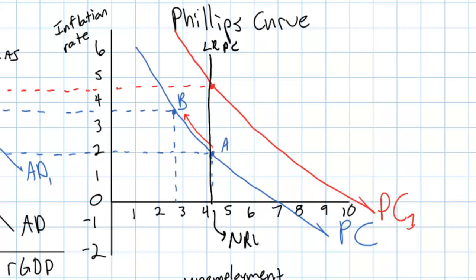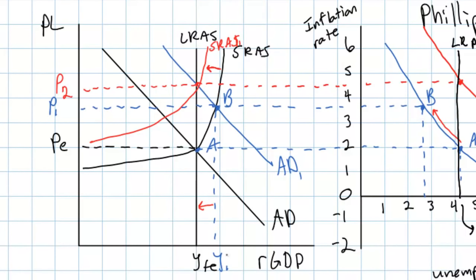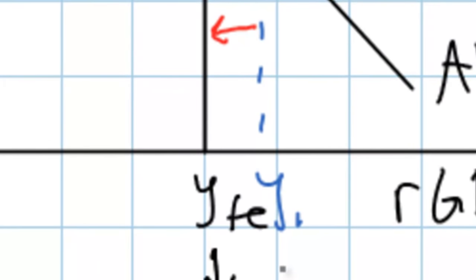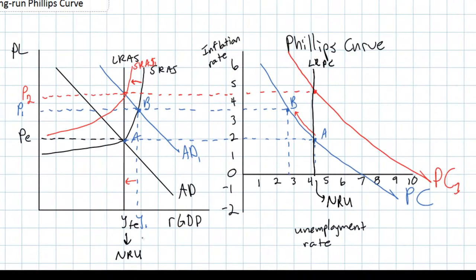We call this the NRU. We know that just over four percent is the natural rate because that's the unemployment rate that exists when an economy is producing at its full employment level of national income and output. Due to the flexible nature of wages and prices in the long run, following an increase in aggregate demand, output returns to its full employment level and unemployment returns to its natural rate. Inflation will be higher unless the government or central bank takes contractionary action.